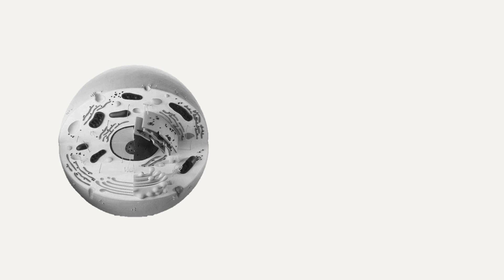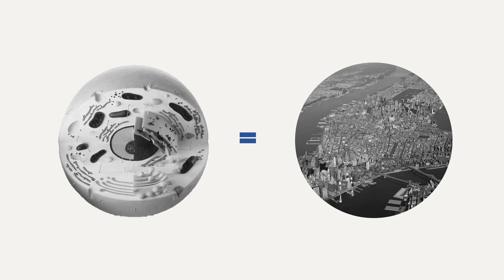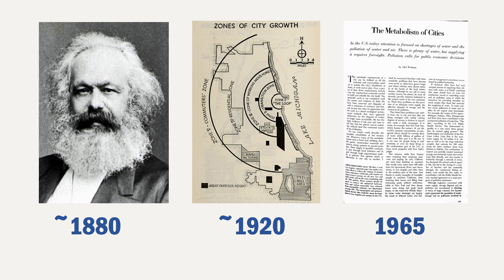What is urban metabolism? Urban metabolism is a metaphor — an analogy that compares cities to a living organism. As an organism, a city requires resources to function; it transforms them or stocks them within its territory, and then discards them as different types of waste. Yet a unique definition does not exist, as different disciplines and schools of thought have used this expression to point out different findings.